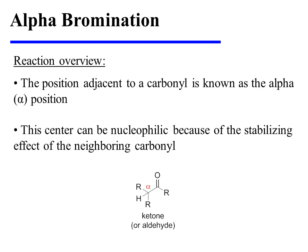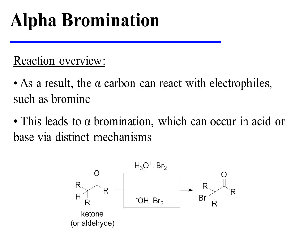The position adjacent to a carbonyl is known as the alpha position. This center can be nucleophilic because of the stabilizing effect of the neighboring carbonyl. As a result, the alpha carbon can react with electrophiles such as bromine. This leads to alpha-bromination, which can occur in acid or in base via distinct mechanisms.